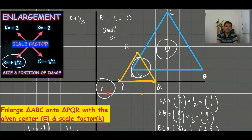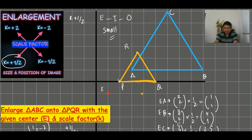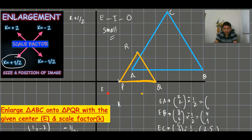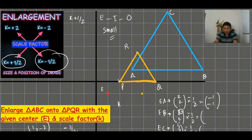The next example uses K is minus one-half. Using the same triangle, all the signs become negative because the scale factor is minus one-half. So (2, 2) becomes (-1, -1), (8, 2) becomes (-4, -1), and (5, 7) becomes (-2.5, -3.5). These are the new coordinates for the fourth case.